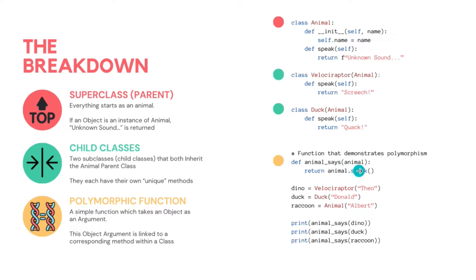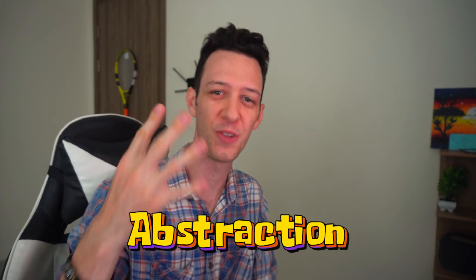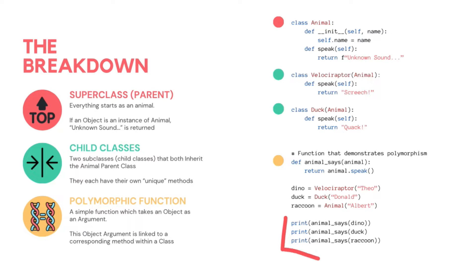I have two child classes because these are inheriting our Animal class. Outside, you can see my yellow — that's my polymorphic function. It's a function, not a method. It's unlinked to any class. It takes an object and I can call a method based on that — it says 'animal says'. I create three objects outside: a dinosaur, a duck, and a raccoon. Dino calls speak and gets a screech; duck calls speak and gets a quack. That's polymorphism.